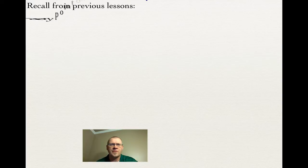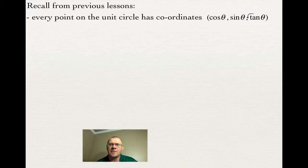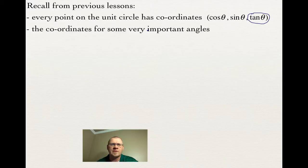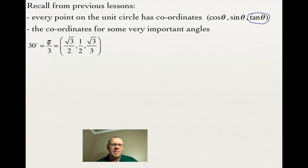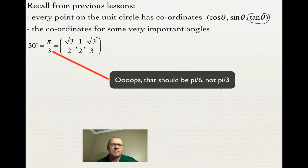Recall from previous lessons that every point on the unit circle has coordinates of cosine, sine, and tan. For a 30-degree angle, which is pi over 6, the coordinates are root 3 over 2, one half, and root 3 over 3 — representing cosine of 30 degrees, sine of 30 degrees, and tan of 30 degrees.